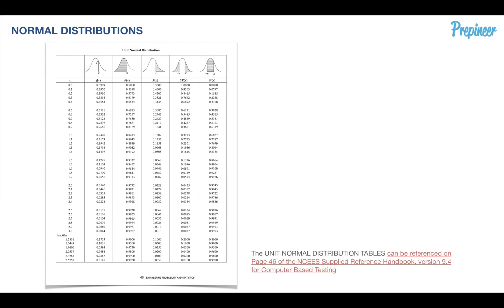Let's take these z-scores back to our unit normal distribution tables. If the z-scores were uniform — say z1 equals negative 4.56 and z2 equals 4.56 — we could use the Wx column for the banded probability. Unfortunately, we do not have a uniform band here, so we must use other columns and combine them to get what we're ultimately looking for.